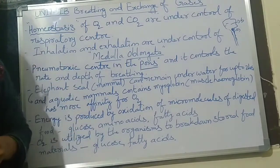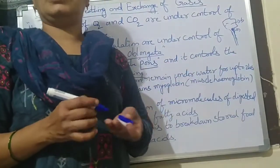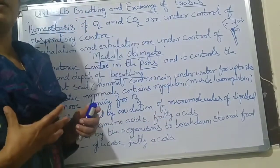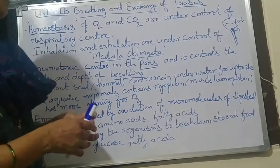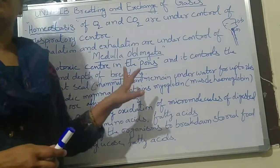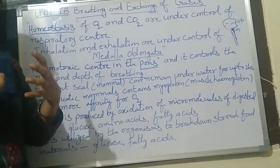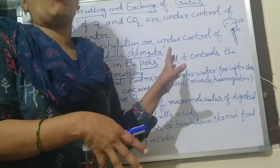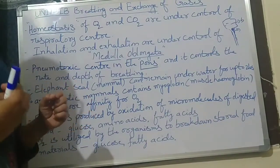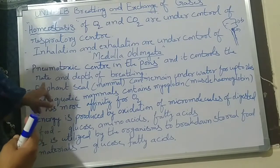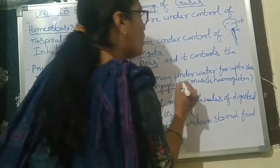The elephant seal is a mammal that can remain under water for up to two hours. We cannot hold our breath for a long time, but the elephant seal, which is an aquatic animal, can hold its breath for up to two hours. Elephant seals and other aquatic mammals contain myoglobin.